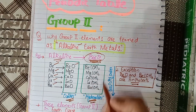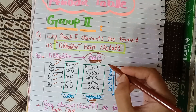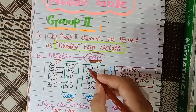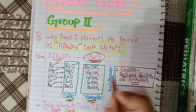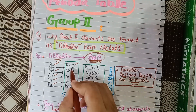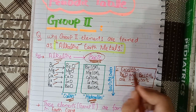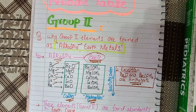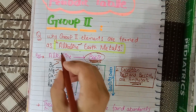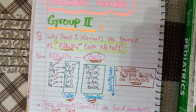If we talk about their basicity order, when we move down the group from beryllium to barium, their basicity increases. Beryllium hydroxide and beryllium oxide show exceptional behavior — these are not basic in nature; they are amphoteric in nature. While the other elements and their oxides and hydroxides are basic in nature, that's why group 2 elements are generally termed as alkaline metals.